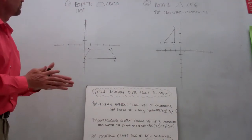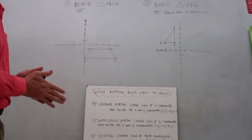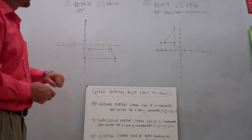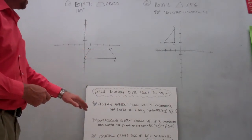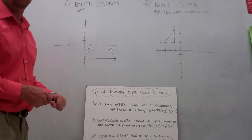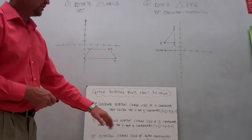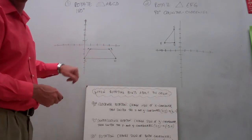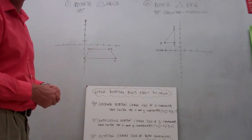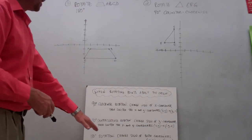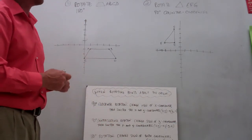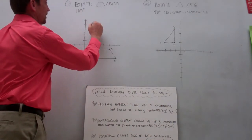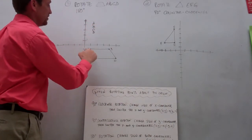Number one: we're asking you to rotate trapezoid ABCD 180 degrees. We have a trapezoid on the coordinate plane, and if we follow our rule for a 180-degree rotation, we're going to change the sign of both the x and y-coordinates on all of the vertices. The first thing we should figure out is what the coordinates are, so let's look at our pre-image.